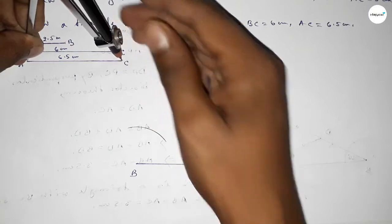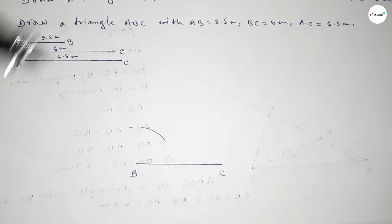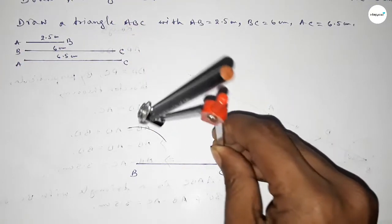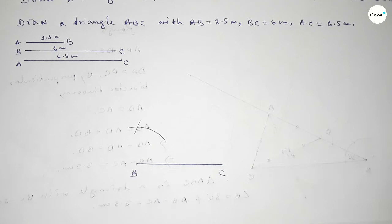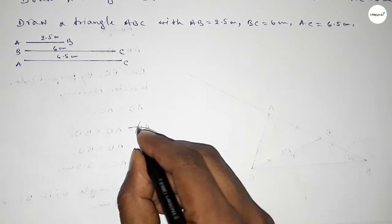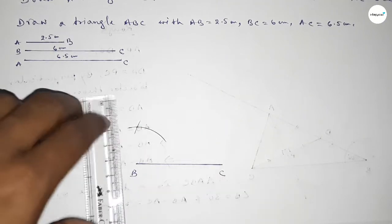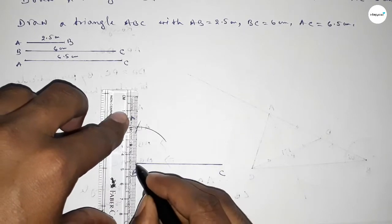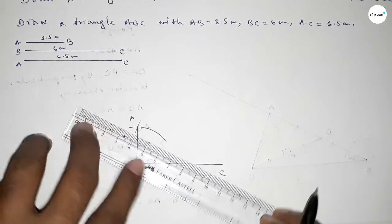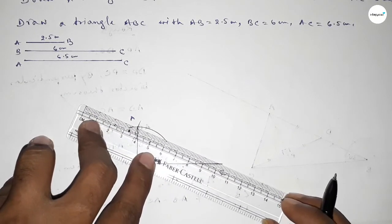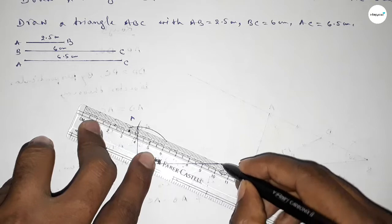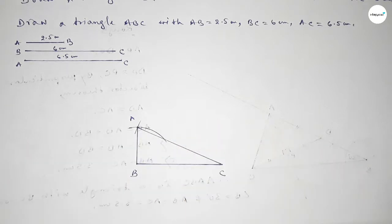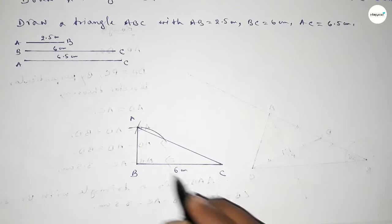Next taking the length AC using compass and putting the compass on point C and cutting here, so both curves intersect at a point — this is point A.